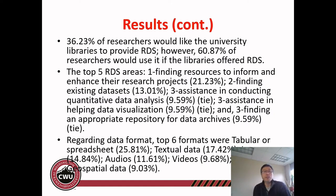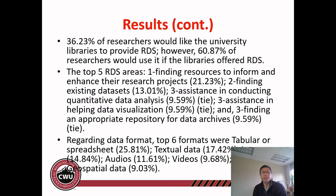Regarding what top RDS areas we should focus on, the top answer was finding resources to inform and enhance their research projects — for example, help finding grant information, funding agency requirements, publisher requirements, and related works. The second most needed was finding existing data, and the top three answers also included assistance in conducting quantitative data analysis, assistance in data visualization, and finding an appropriate repository for data archives.